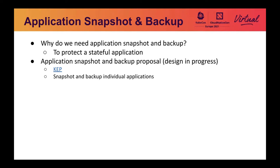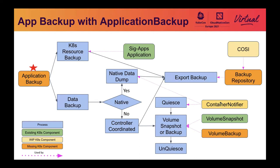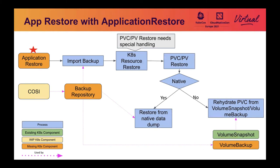We have snapshot APIs for individual volumes, but what about protecting a stateful application? There is a KEP submitted that proposes Kubernetes APIs defining the notion of stateful applications and how to run operations on those stateful applications, such as snapshots, backup, and restore. This is still in a very early design stage. Application backup handles the backup of a stateful application — it can leverage container notifier to do quiesce and use COSI as the backup repository. Similarly, application restore handles the restore of a stateful application.